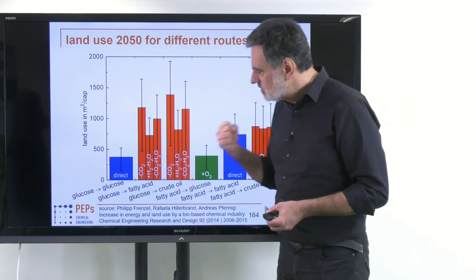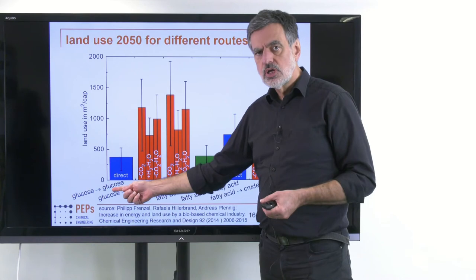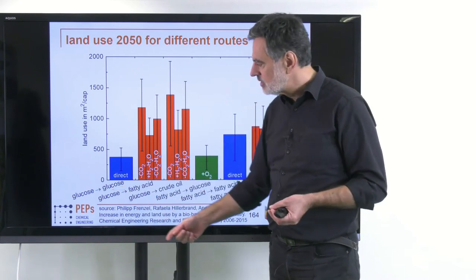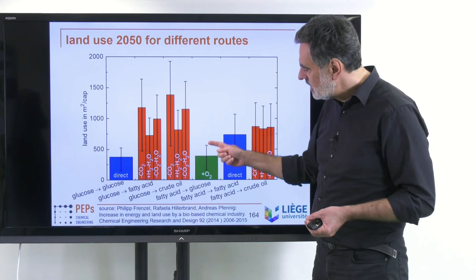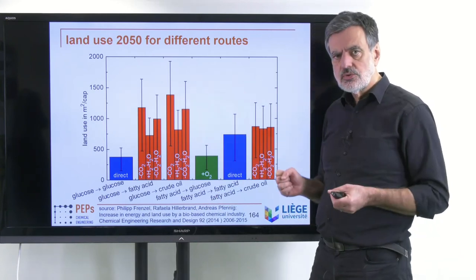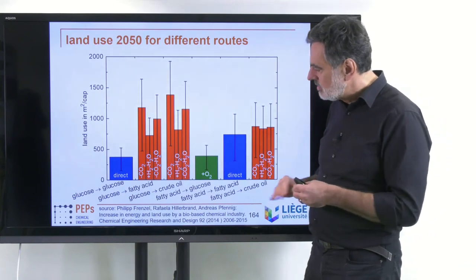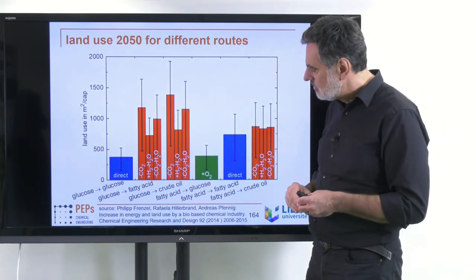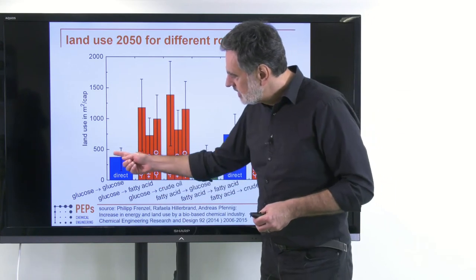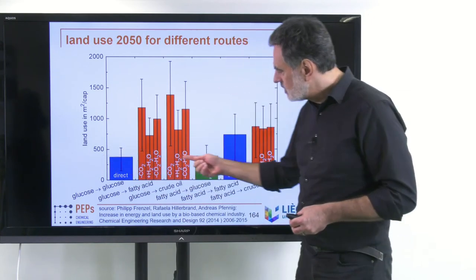If you want to go from fatty acid to the crude oil level, the land area demand increases significantly. So again, also with respect to area, it's good to have lots of oxygen in the product — that minimizes the area demand. On the other hand, there are very large variations stemming from the different scenarios accounted for, which you can read about in the corresponding publication.